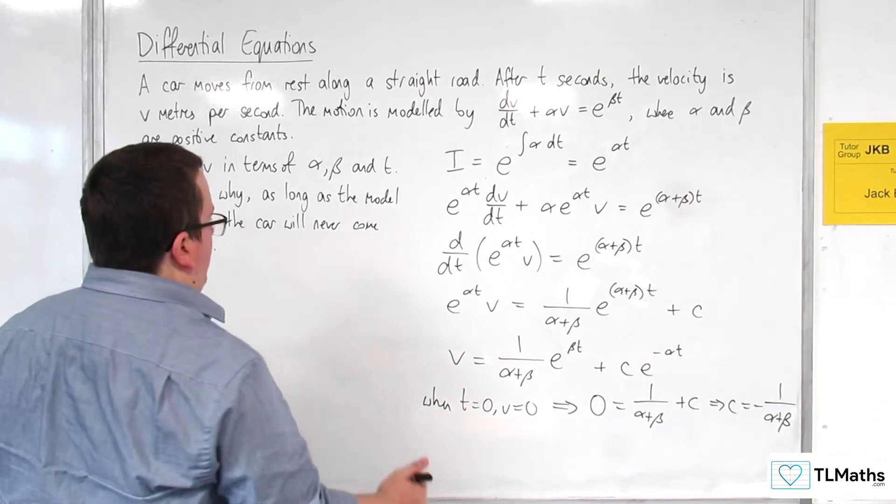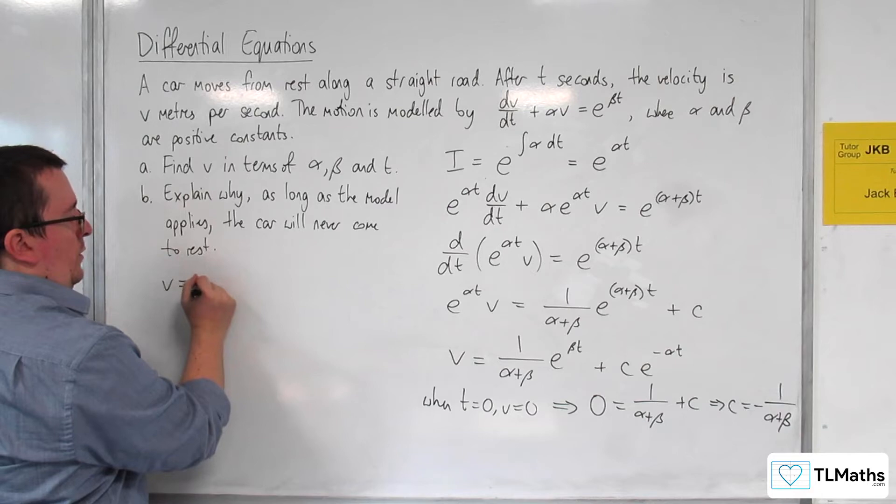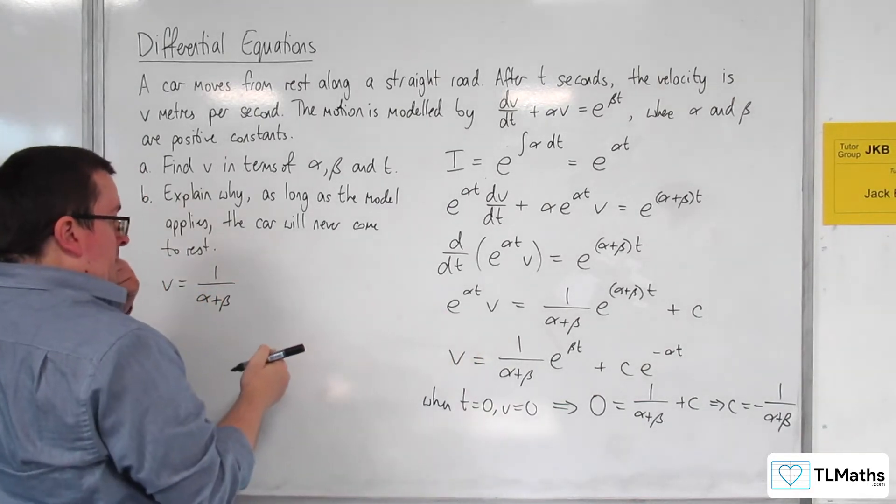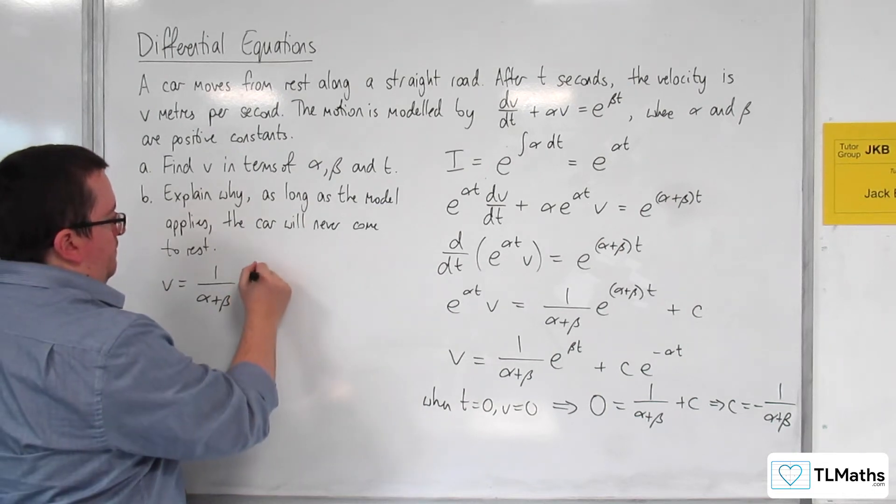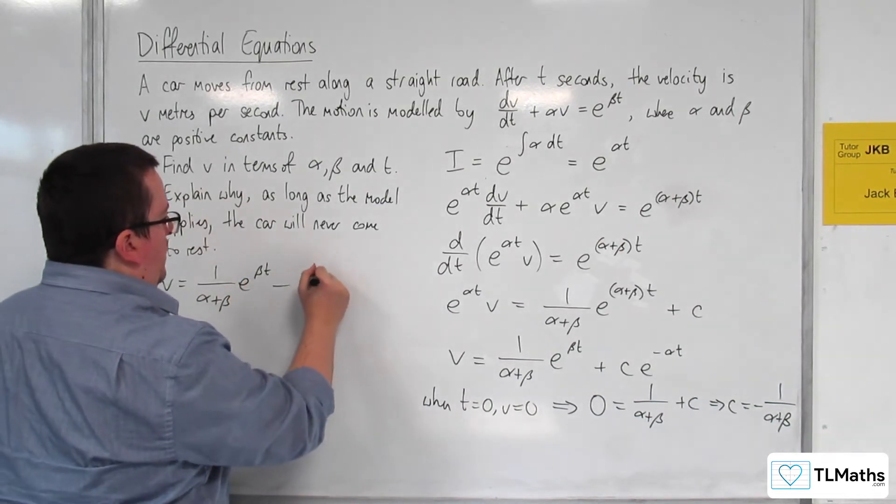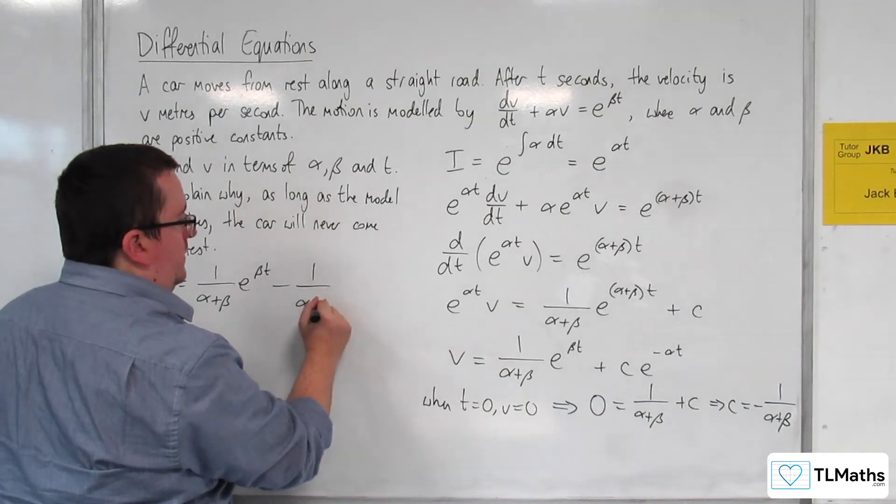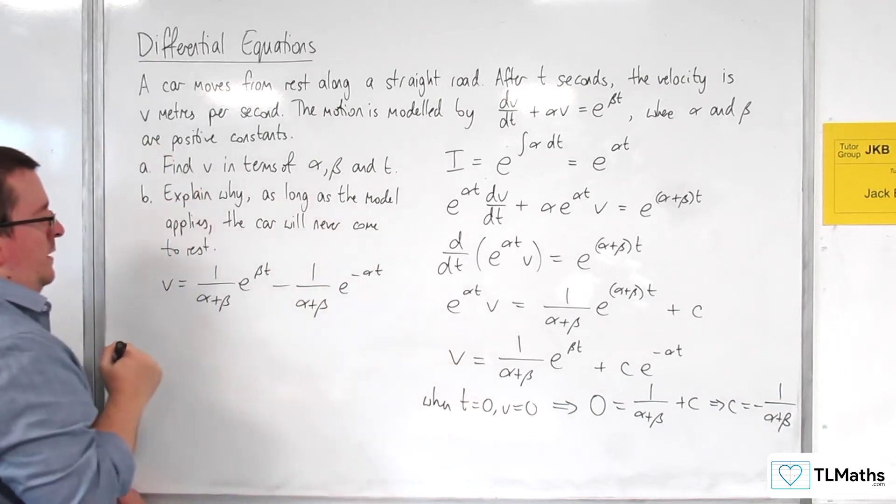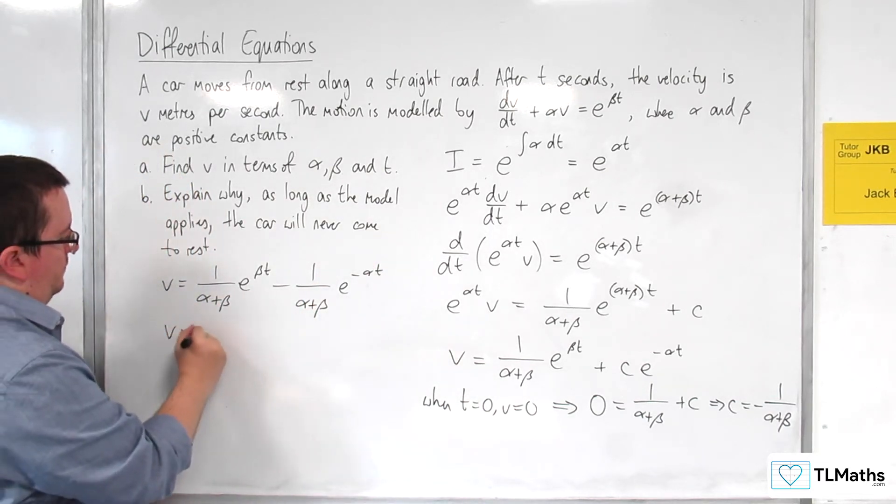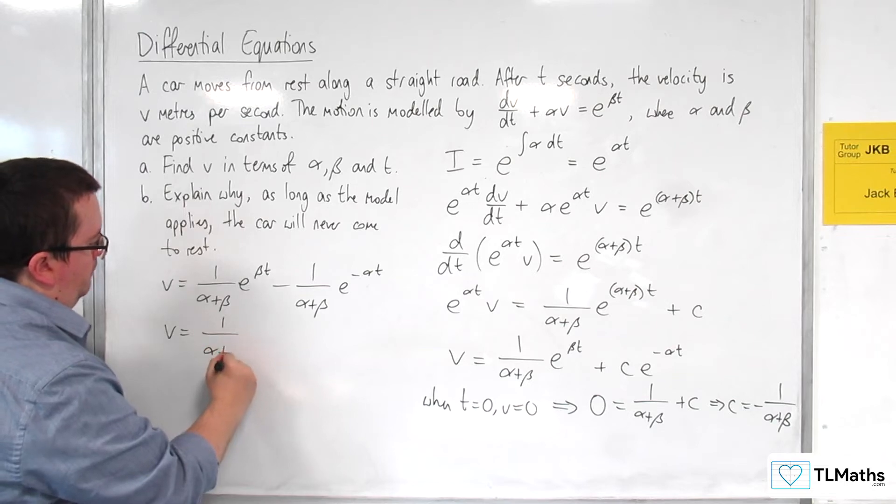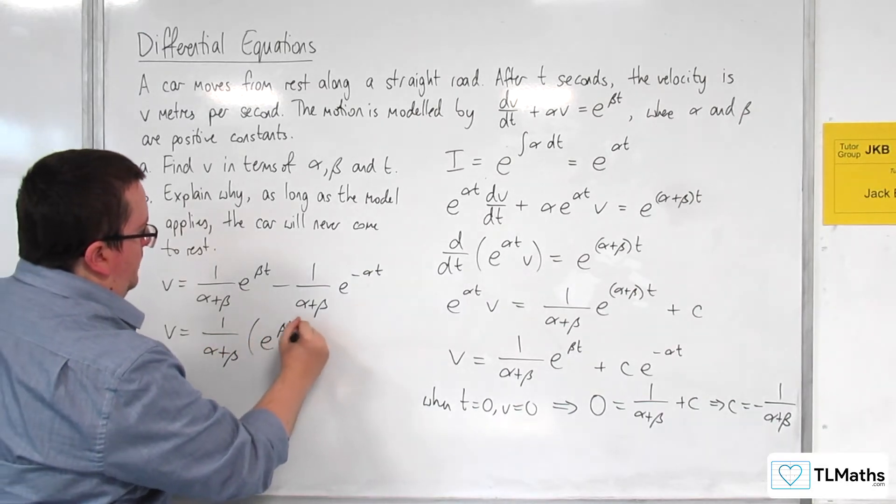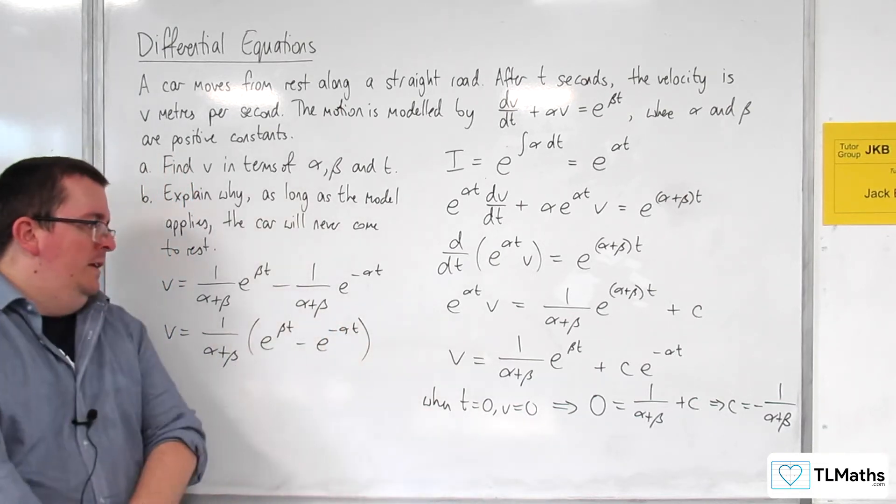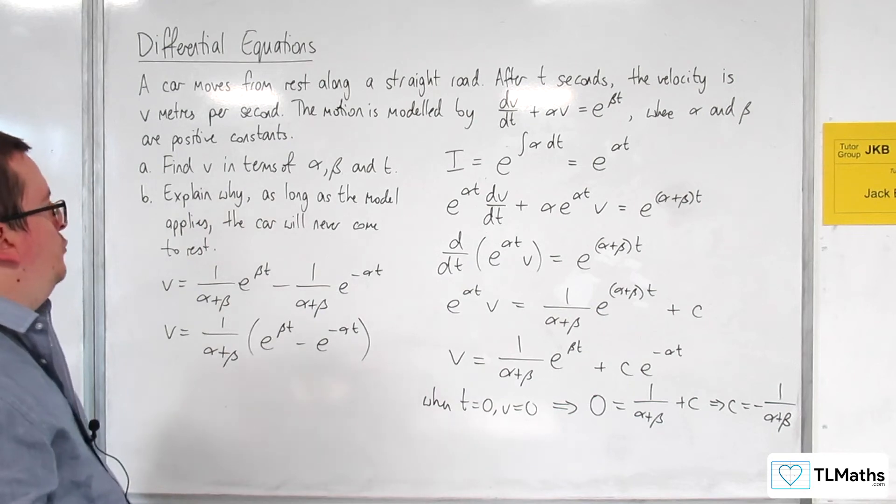Now, I'm going to put it all together. I've got v equals 1 over (α+β) times e^(βt) minus 1 over (α+β) times e^(-αt). I can factor out the 1 over (α+β), and write that as e^(βt) minus e^(-αt). So that's the neatest form I can get my answer into.